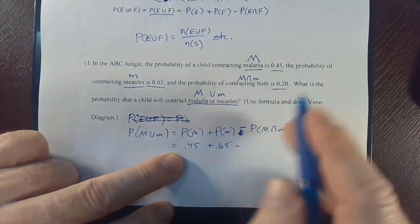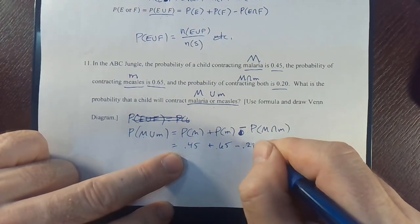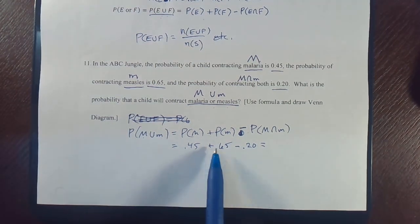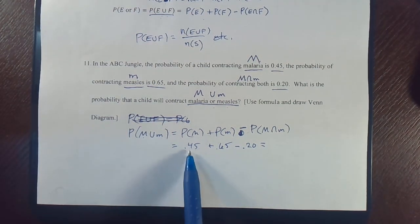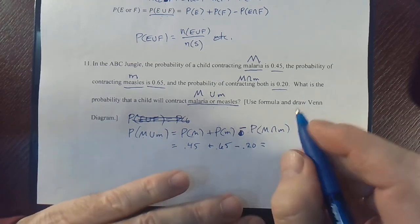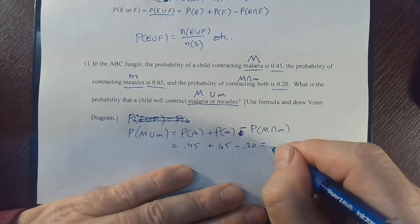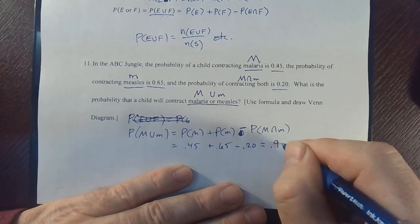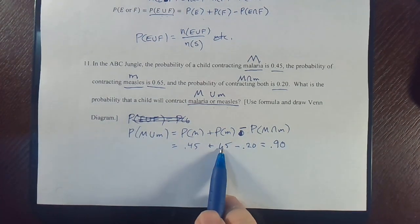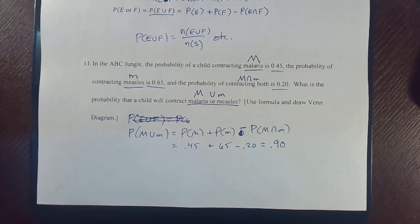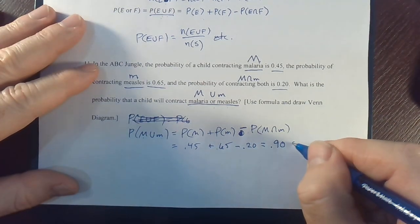Subtracting 0.20 from 1.10 gives 0.90, or 90%. So there is a 90% probability that a child will contract malaria or measles.